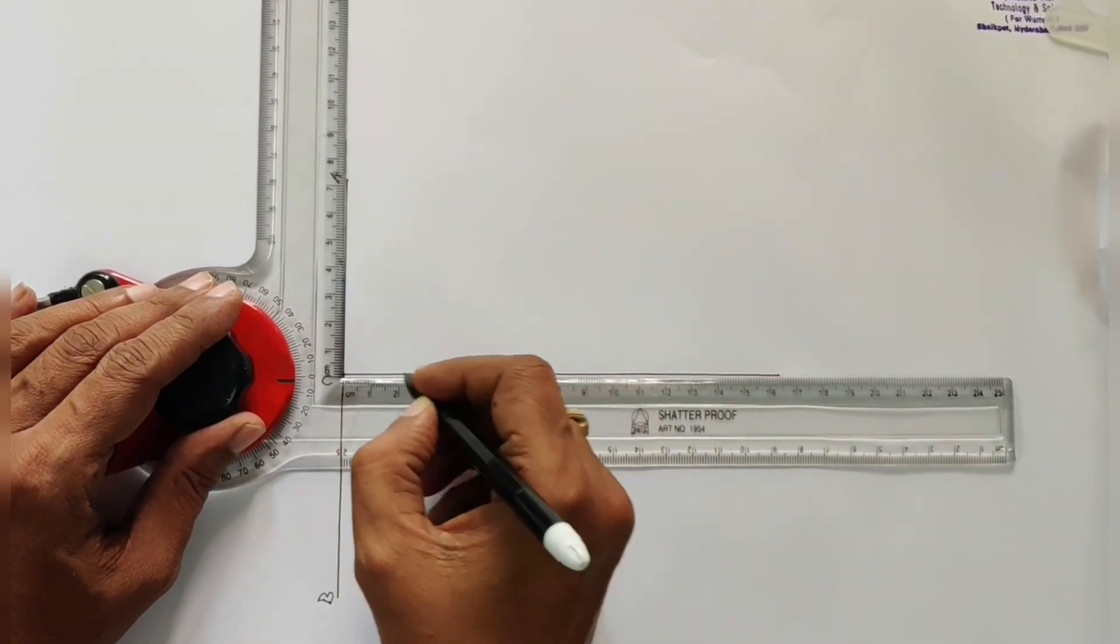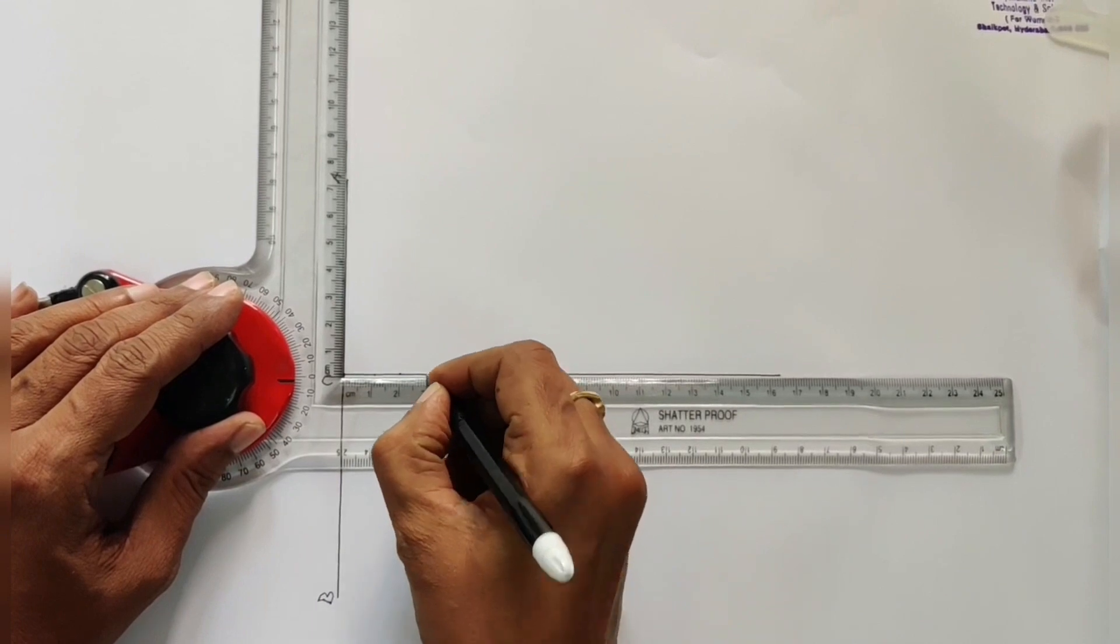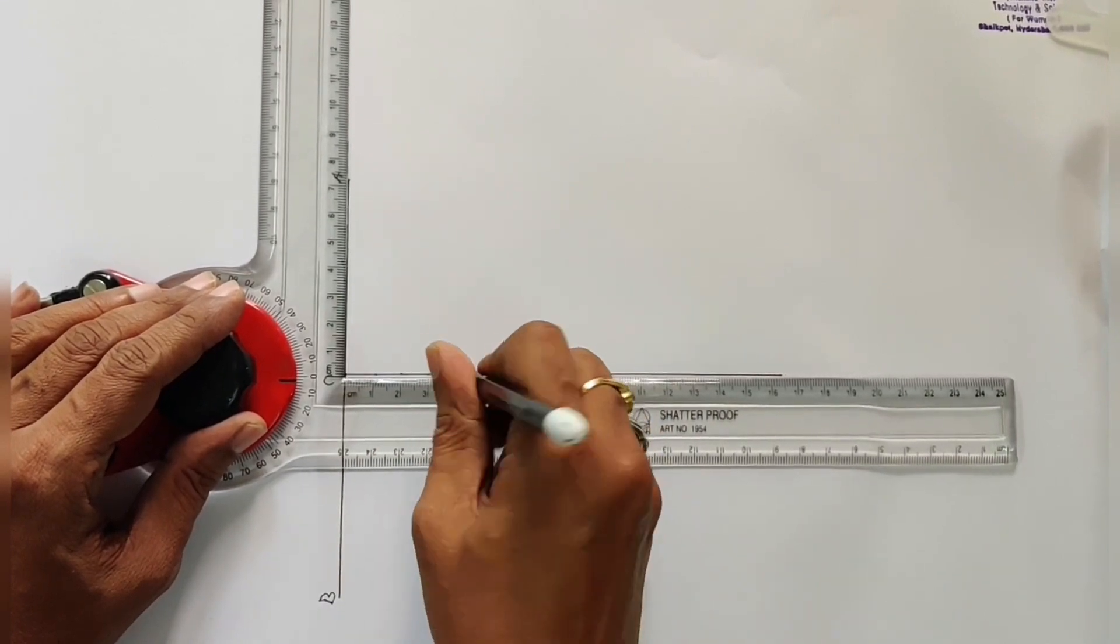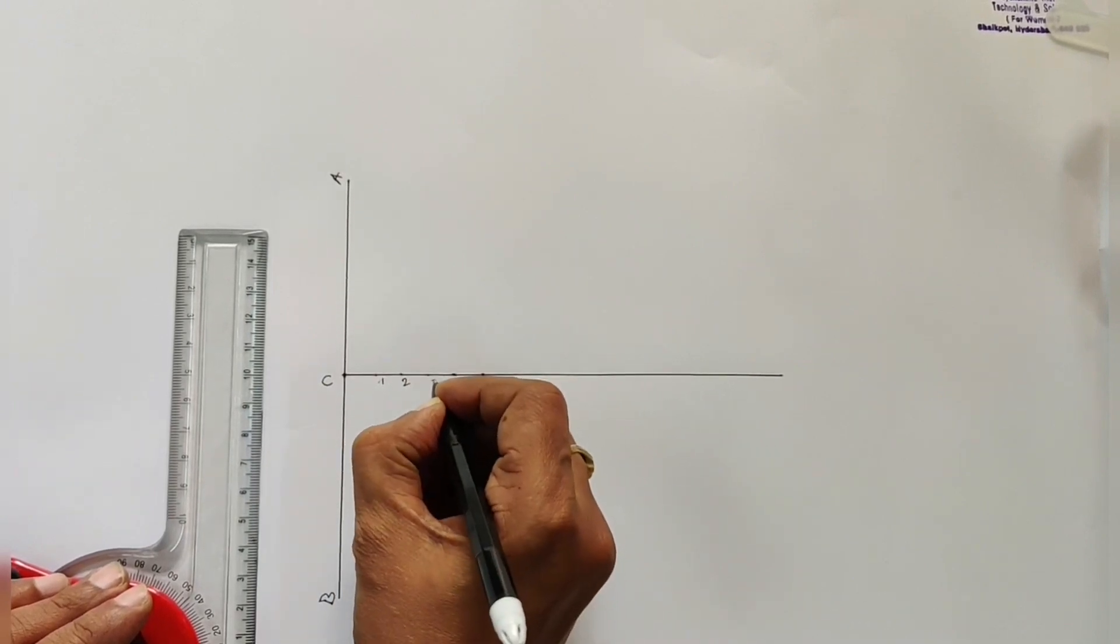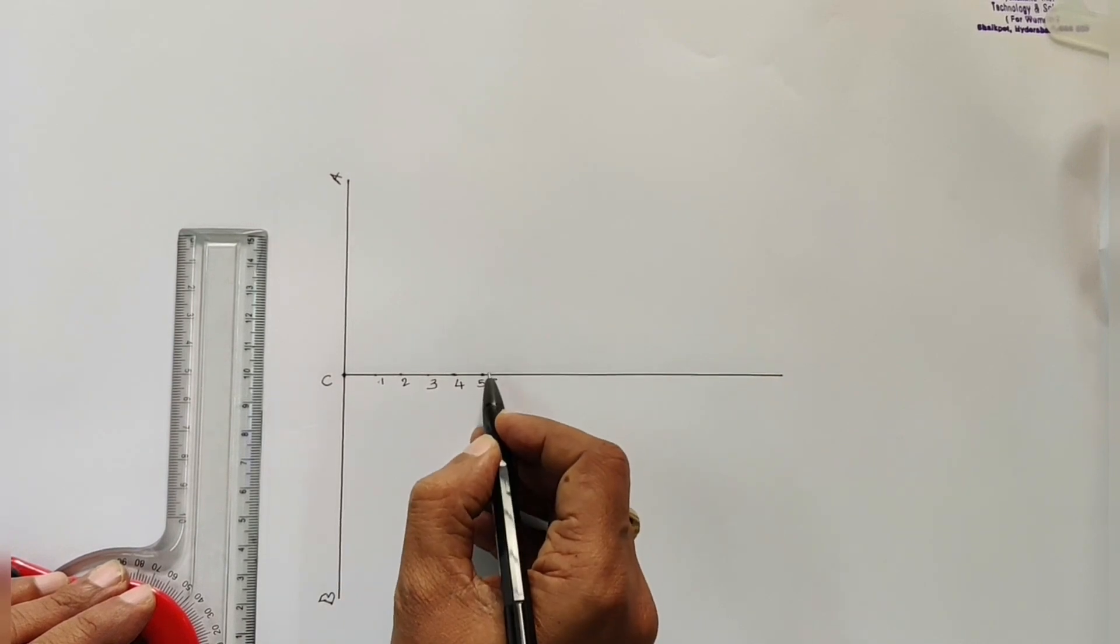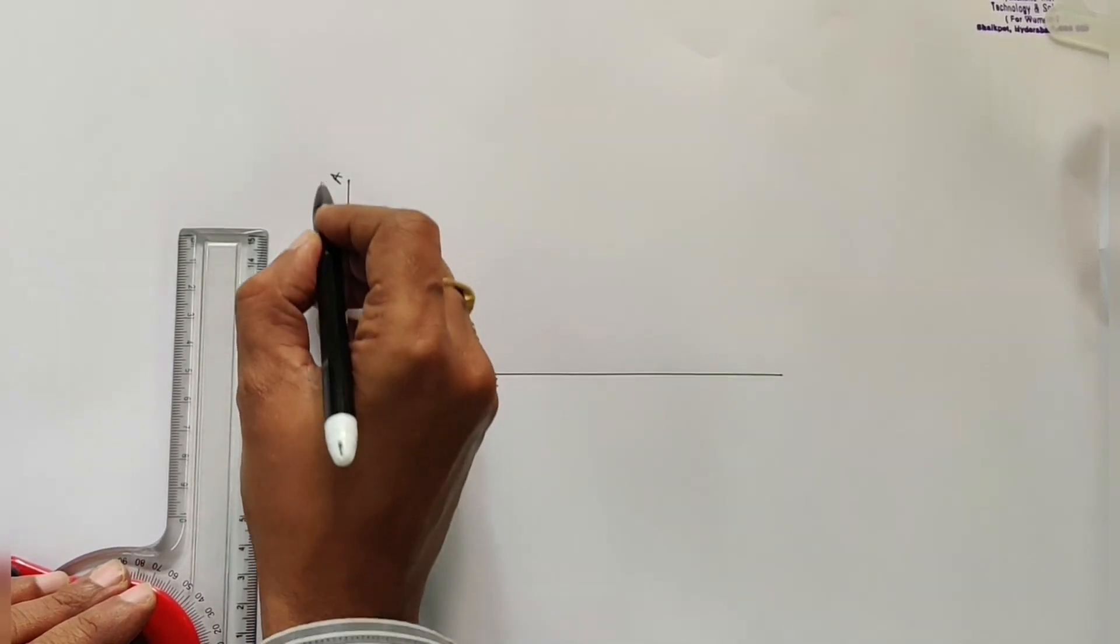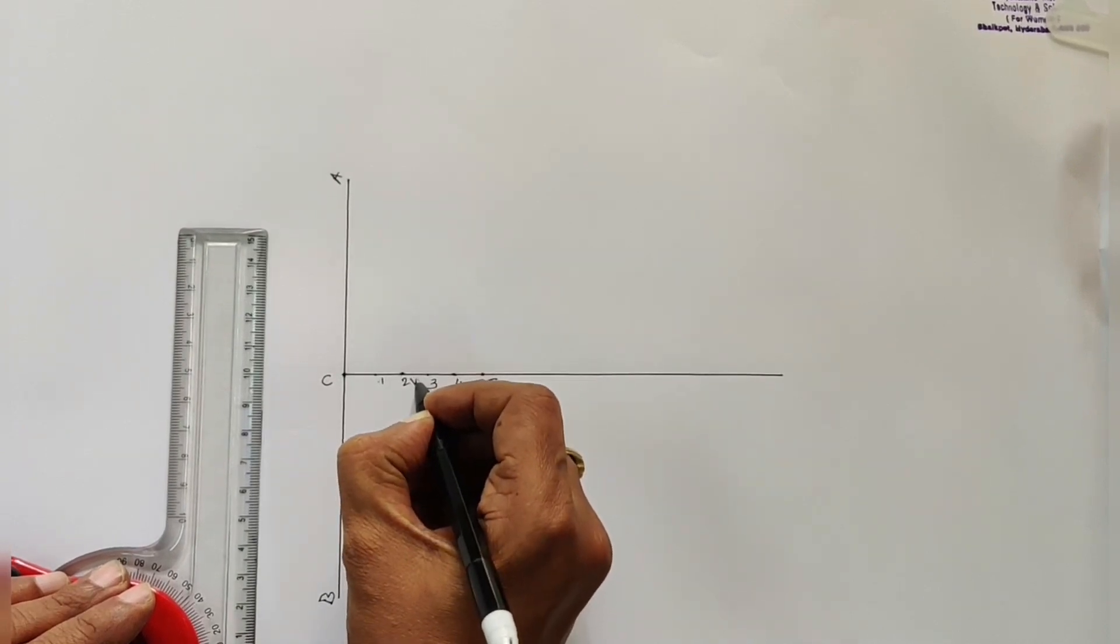Divide the line into five equal divisions. One from focus, three divisions. From directrix, two divisions. Hence, we have to locate vertex.